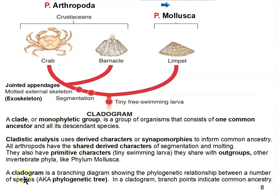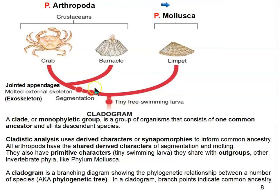A cladogram is a branching diagram that shows the phylogenetic relationships between a number of different species — it's also known as a phylogenetic tree. In a cladogram or phylogenetic tree, branch points indicate common ancestry. There is common ancestry between molluscs and arthropods, but there's closer common ancestry between the crab and the barnacle than between the crab and the limpet, or the barnacle and the limpet. There is a common ancestor of all invertebrates, including molluscs and arthropods, and a common ancestor of all arthropods, including crabs and barnacles.